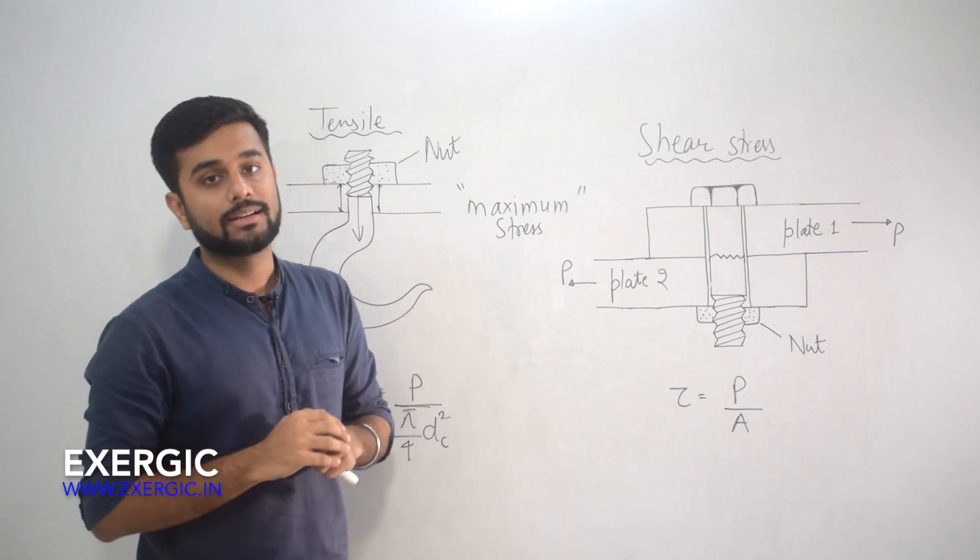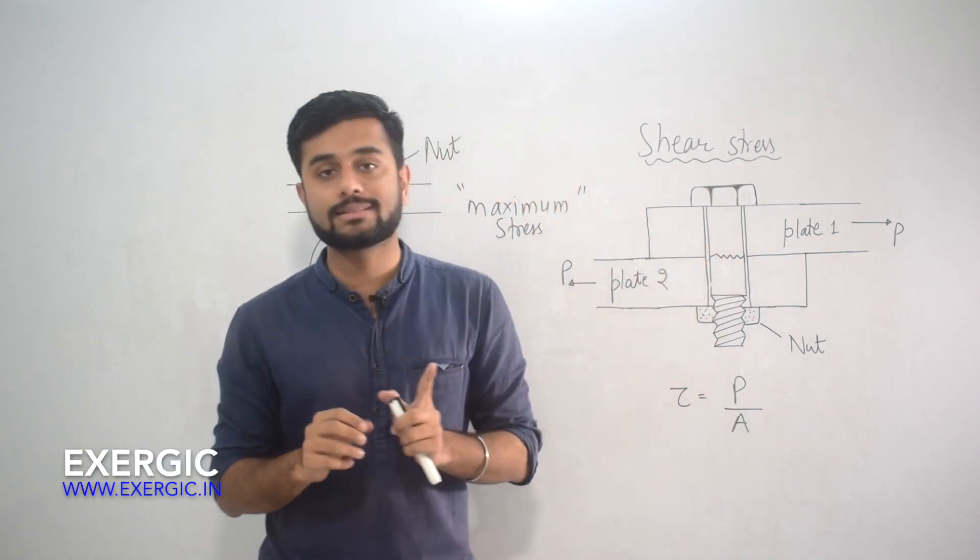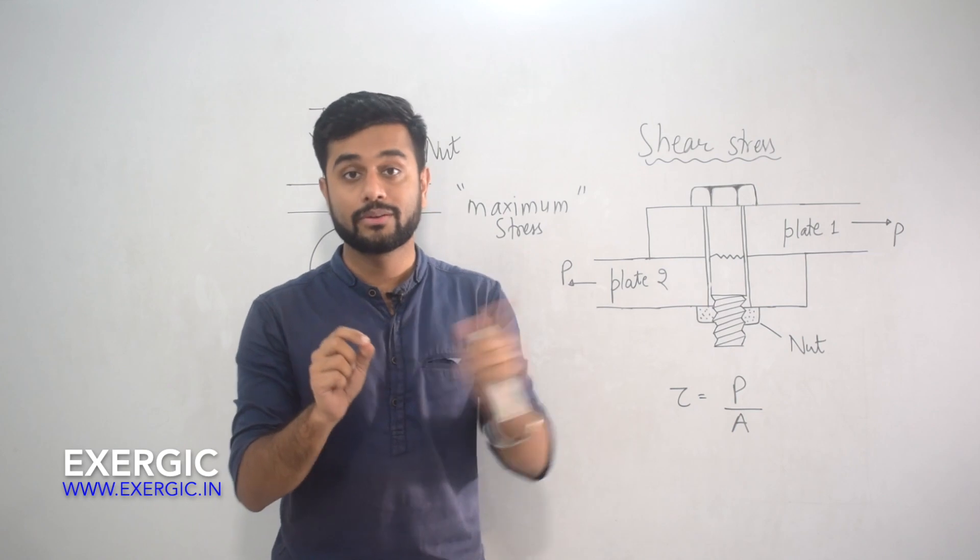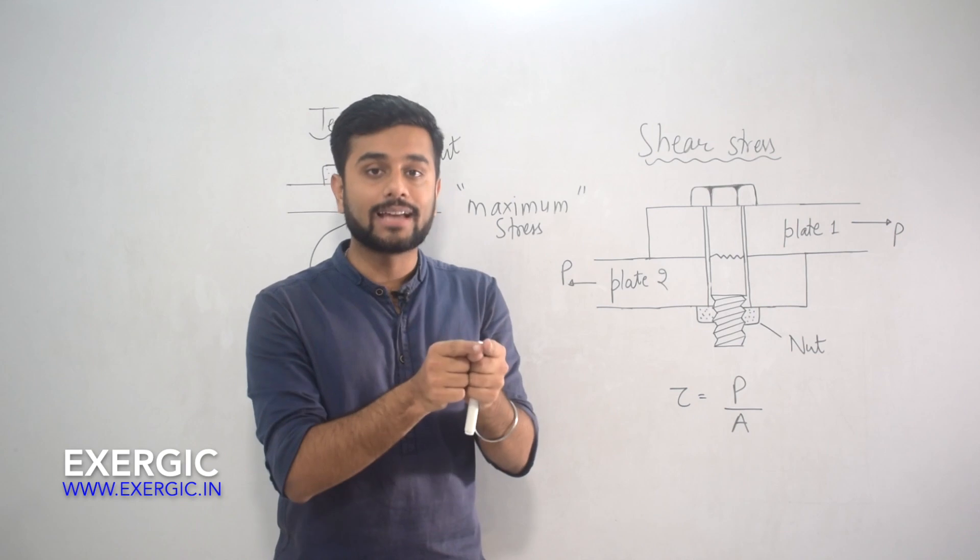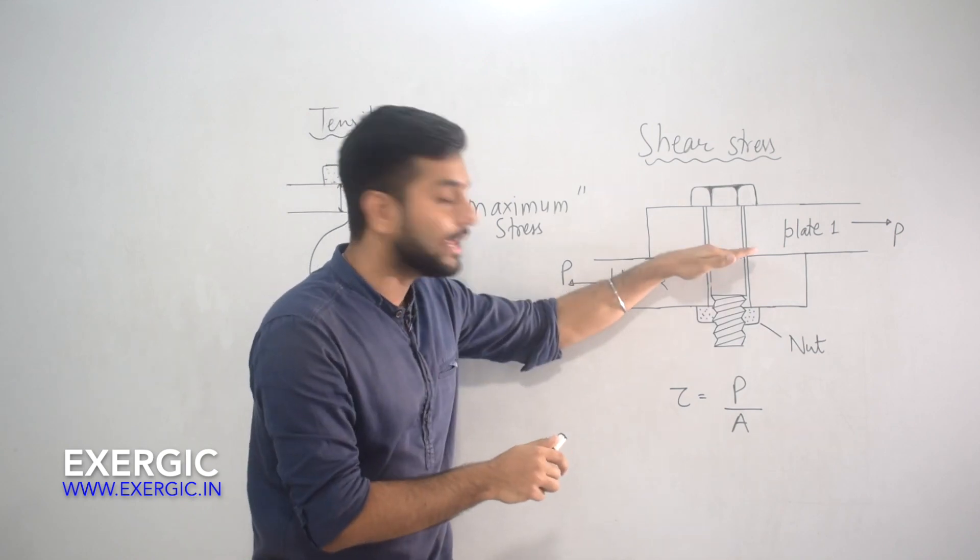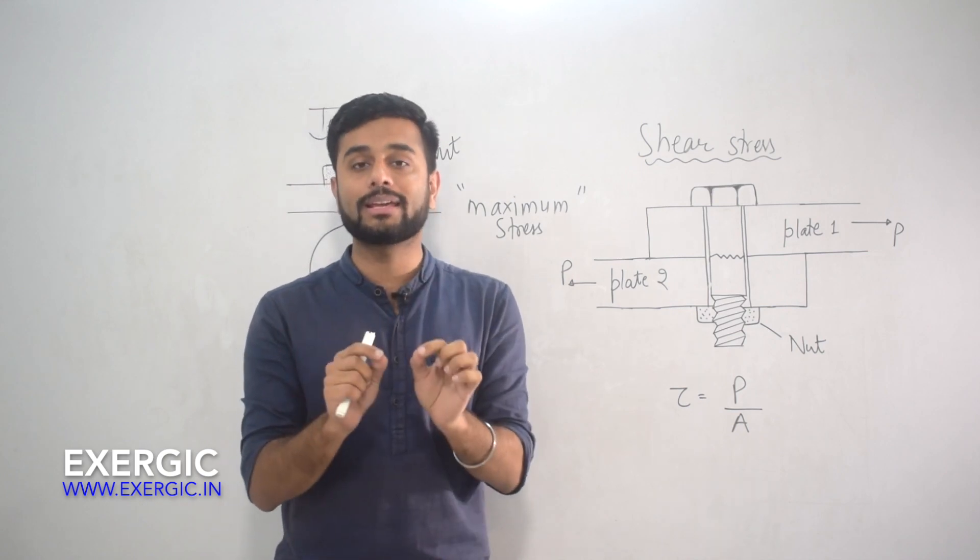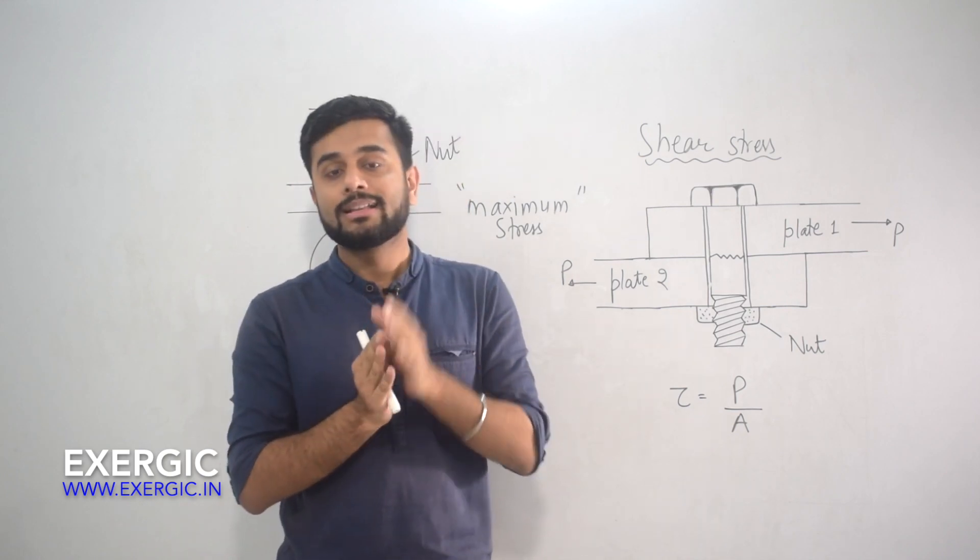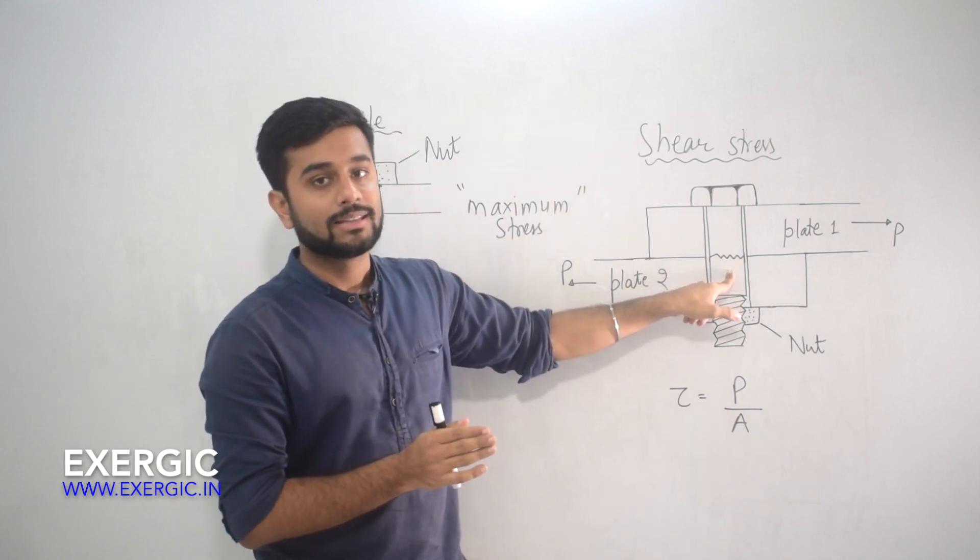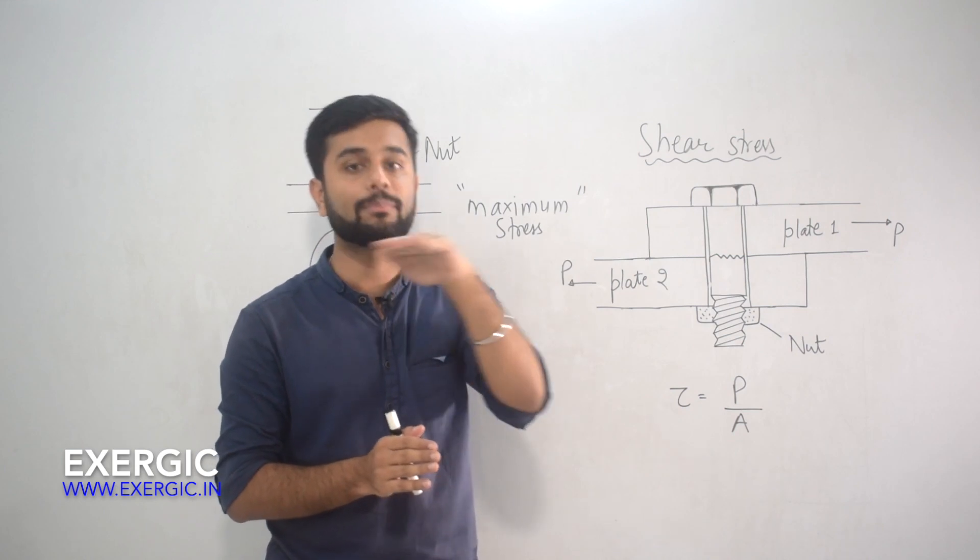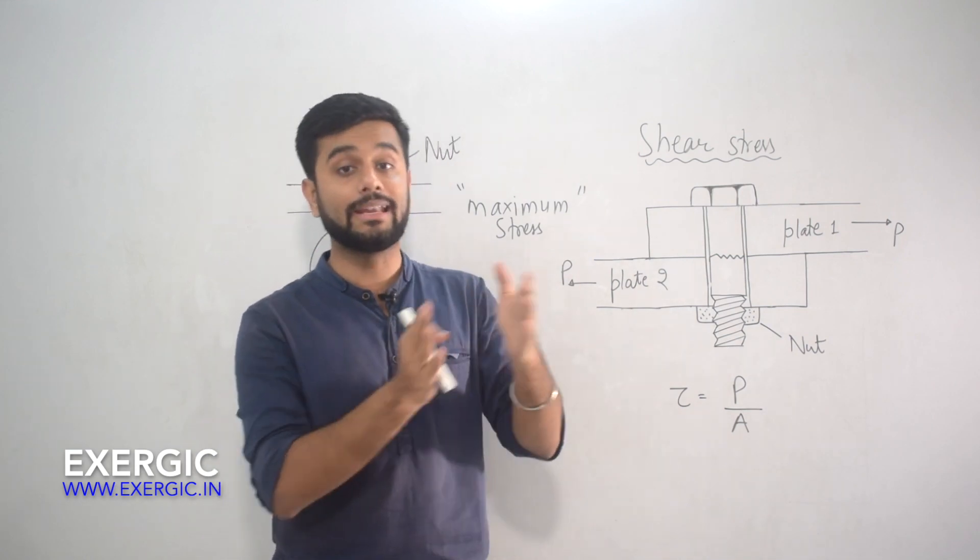That is why you need to understand this design concept: that whenever we are designing these bolts, nuts and bolts for shear, then the ideal design is that design when at the shear area you do not have thread. I am repeating it, that whenever you are making a good design in case of bolted joints, then the shear area should have unthreaded part of the shank and not the threaded part. This is the safer or the ideal design for it.